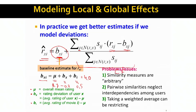There are a few caveats. First, finding a good similarity measure S_ij is very hard — it's somewhat arbitrary and one has to try many different metrics. Pairwise similarities consider similarities between movies but ignore similarities between users. Taking a weighted average can also be restrictive. But despite these issues, in practice this model already works quite well.